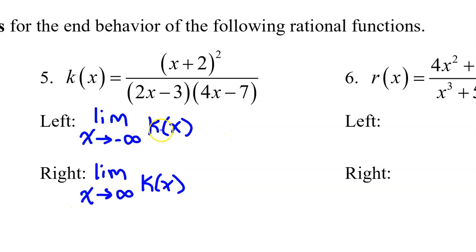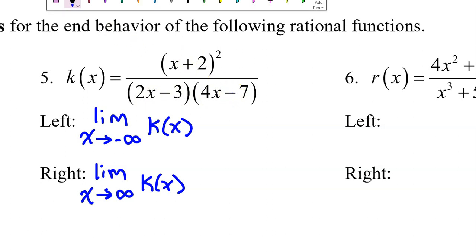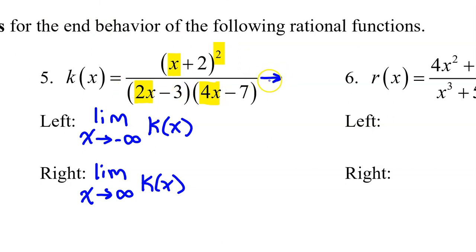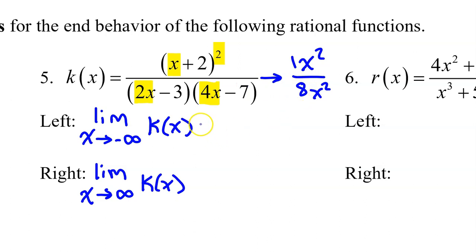Number five — to really know what's going on, we need to know the leading term of the numerator and the denominator. Focus on the leading term of each factor. If there's an exponent, include that. So we have x squared in the numerator, and then 2x times 4x. As x approaches infinity or negative infinity, what matters is the x squared in the numerator and 2x times 4x equals 8x squared. The x squared will cancel out, leaving a constant of 1 over 8. So that is the horizontal asymptote — the left and right end behavior both equal 1 over 8.